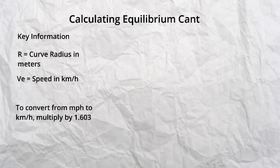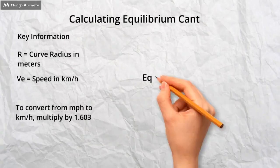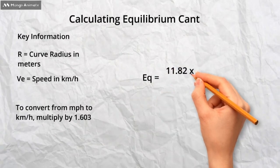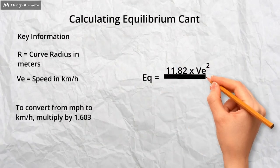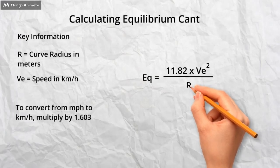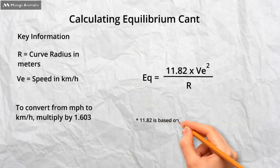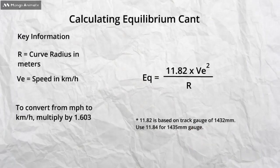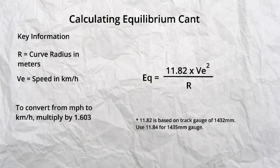So this brings us on to the equation itself. Equilibrium cant, EQ, equals 11.82 multiplied by the speed squared, and divided by the radius. 11.82 is a constant, calculated based on 1432 millimeters track gauge, the standard in the UK. For other gauges the constant will be different, and may need calculating from first principles.